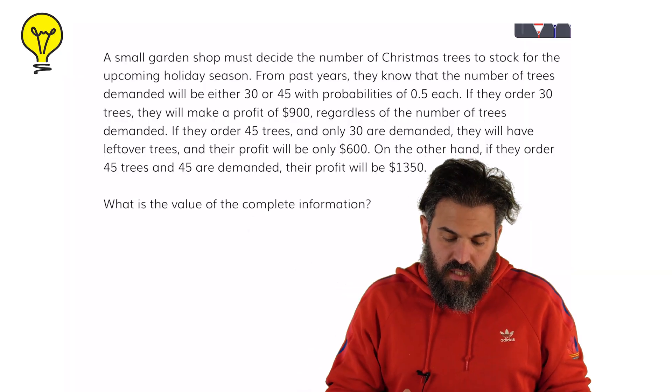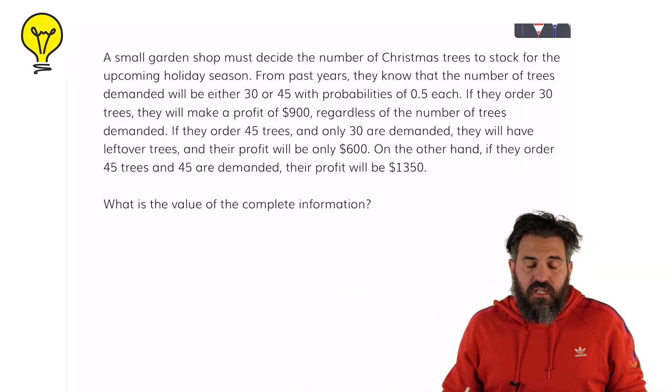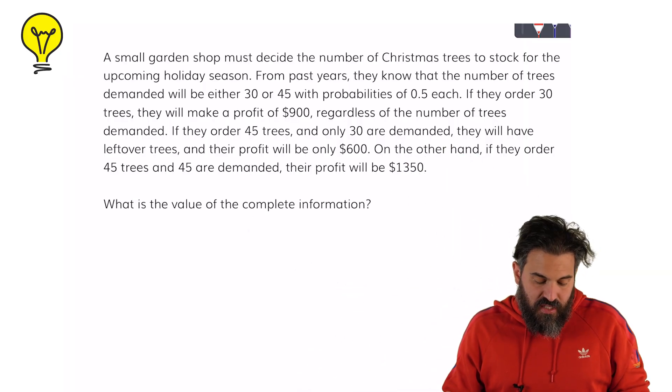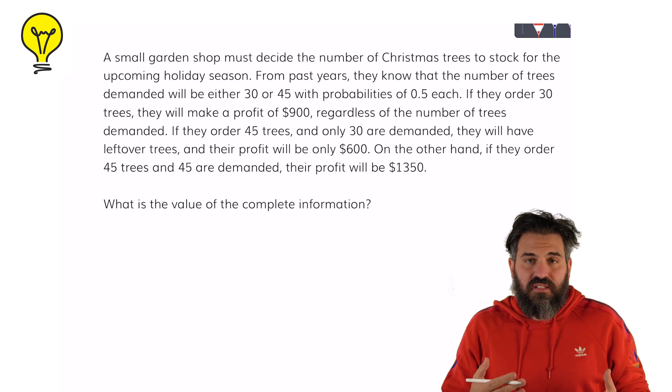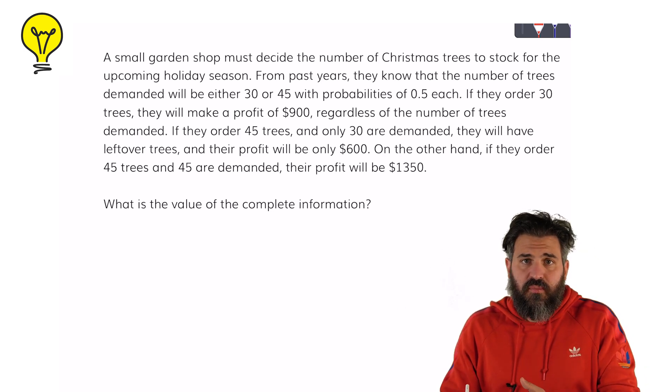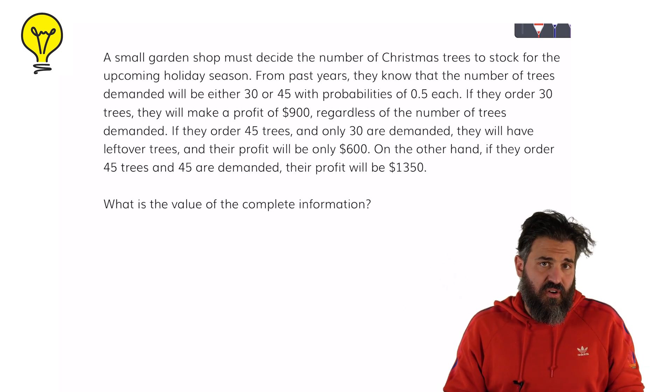When you're faced with a decision with some uncertainty, not having all the information will often lead you to make a wrong decision or a decision that isn't optimal. In this example we're talking about a Christmas tree business and we're trying to decide whether we need to order 30 trees for the upcoming season or 45.